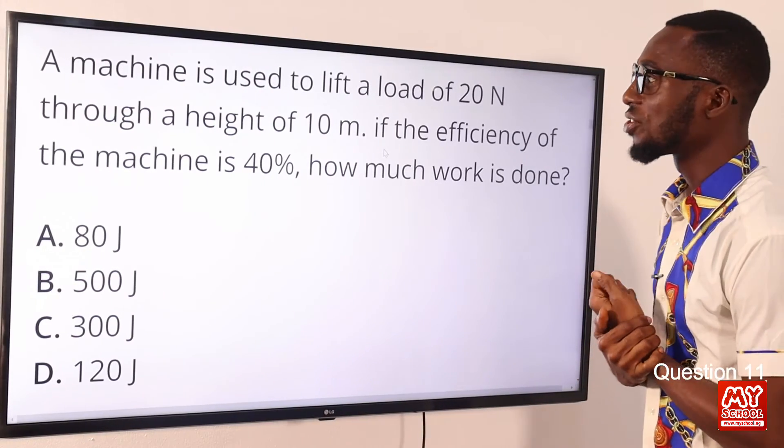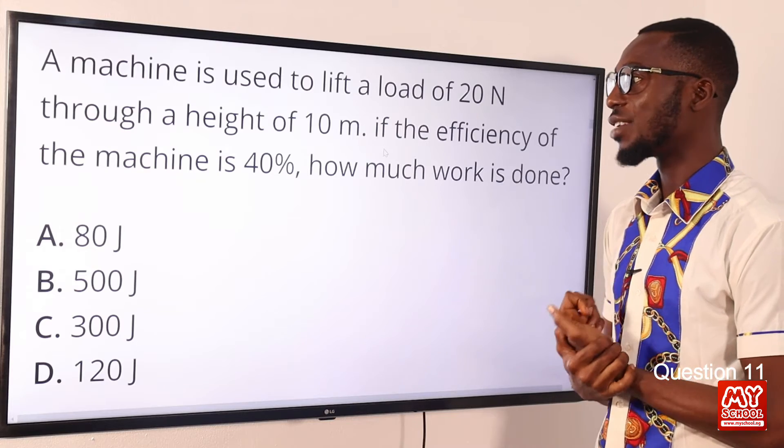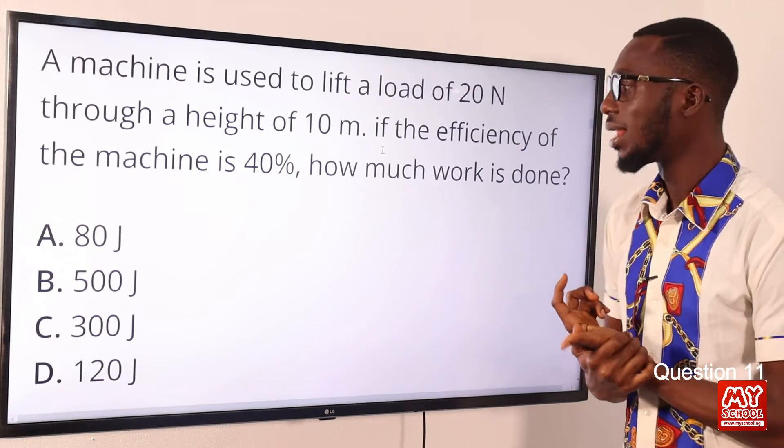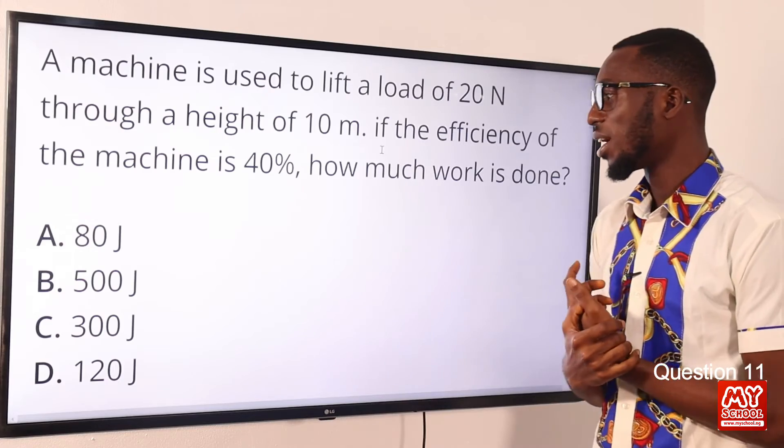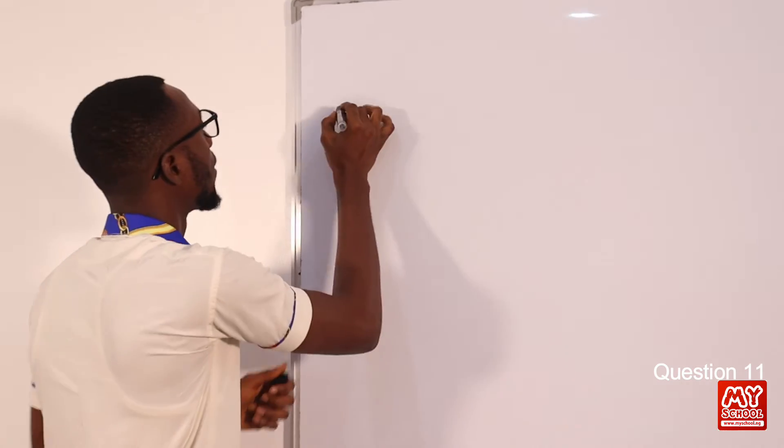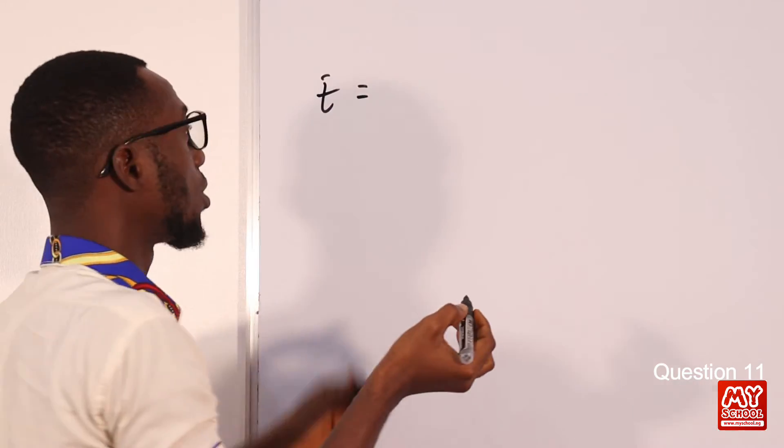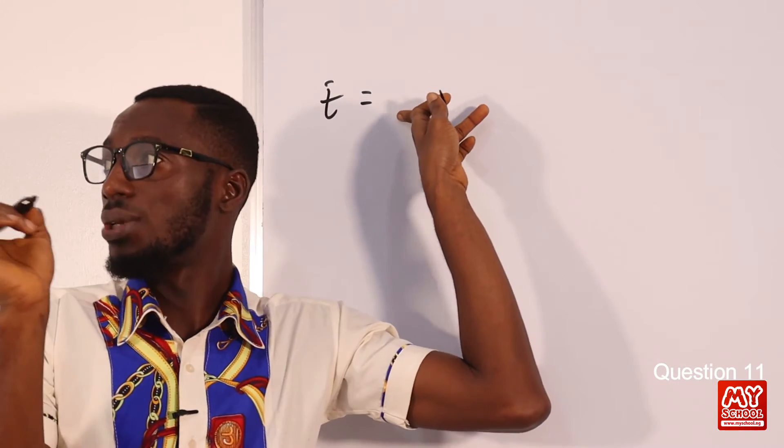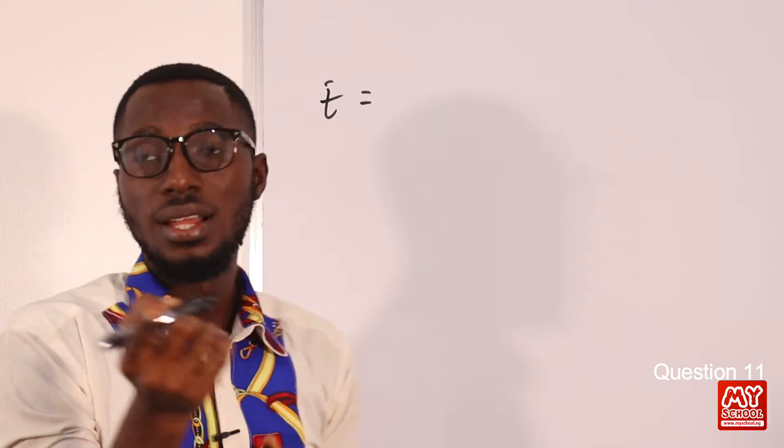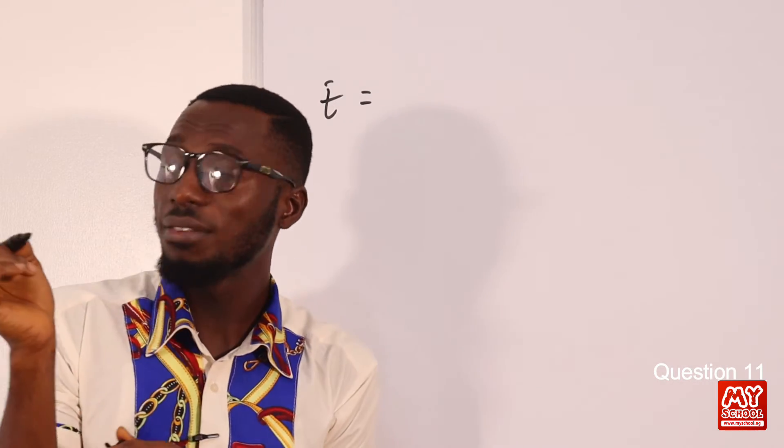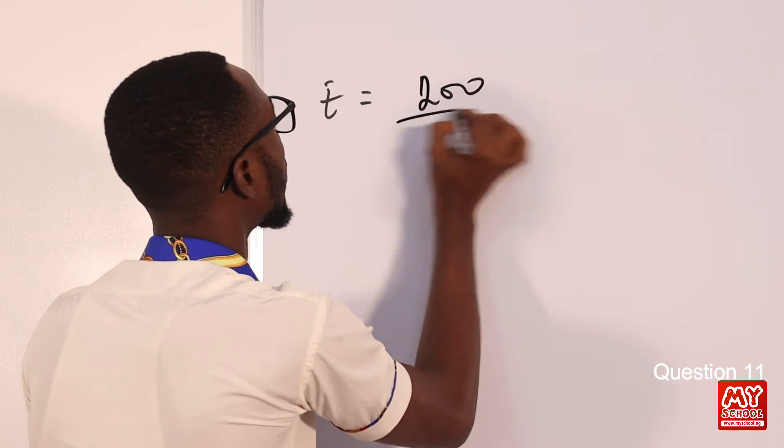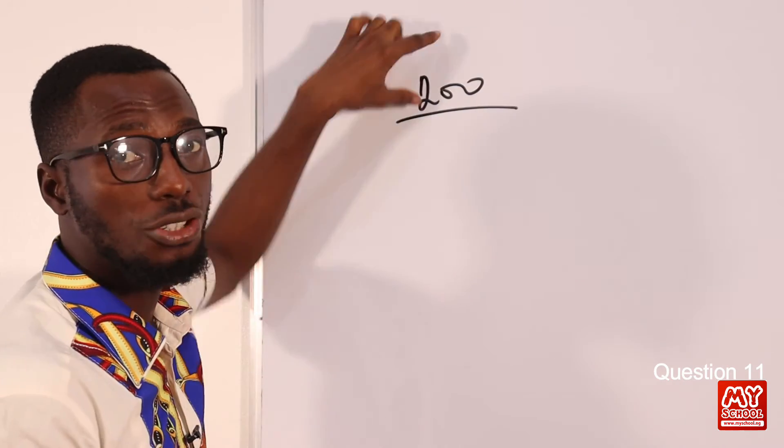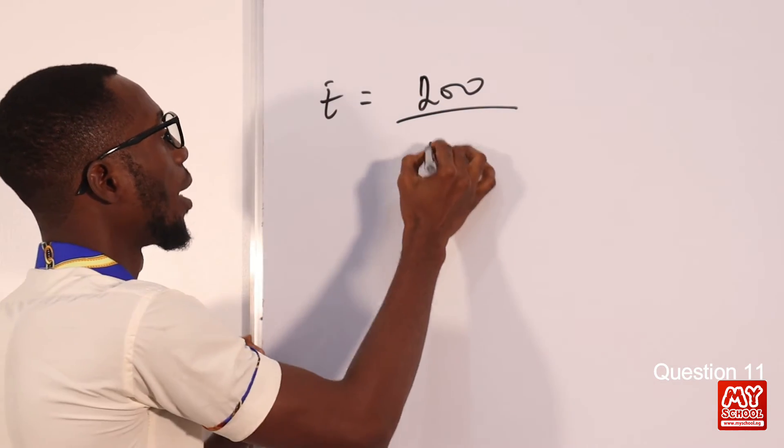Question 11. A machine is used to lift a load of 20 Newton through a height of 10 meters. If the efficiency of the machine is 40%, how much work is done? So this is talking about the work done on the machine. So this is the formula we can use for efficiency. So we can have this efficiency equals the work done by the machine, which can be calculated as the mass times the distance, the height. So that is 20, the load in this sense. It has been changed from mass to load. So we have 20 Newton for the load times the distance. So we have 20 times 10, that is 200 over, remember I said the work done by the machine over work done on the machine. So this is what we are looking for times 100.